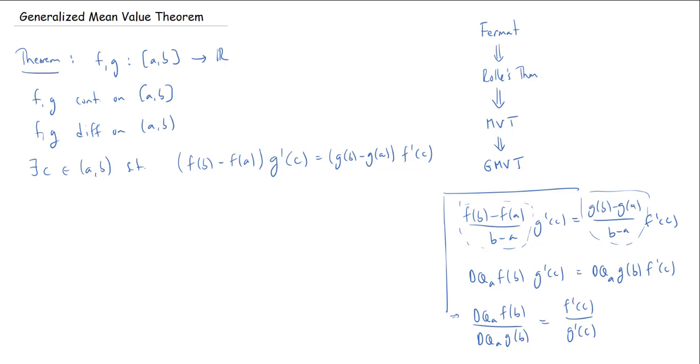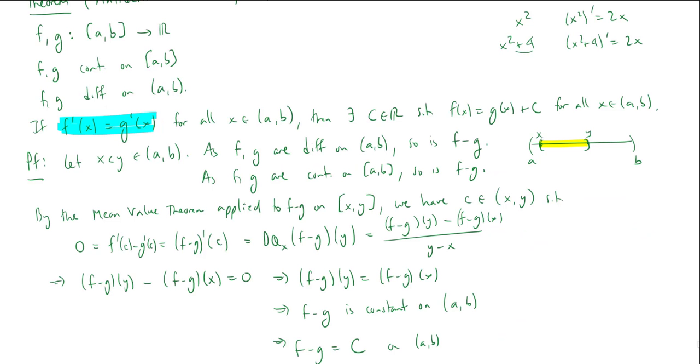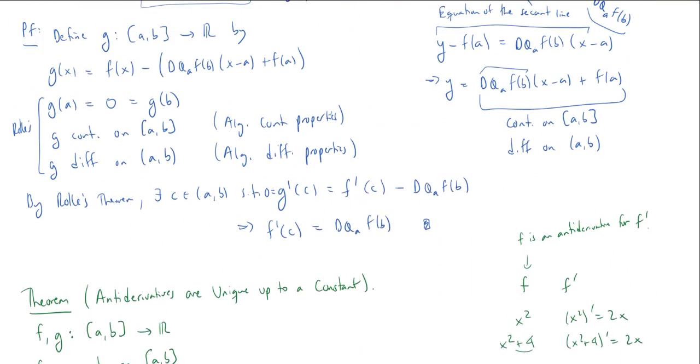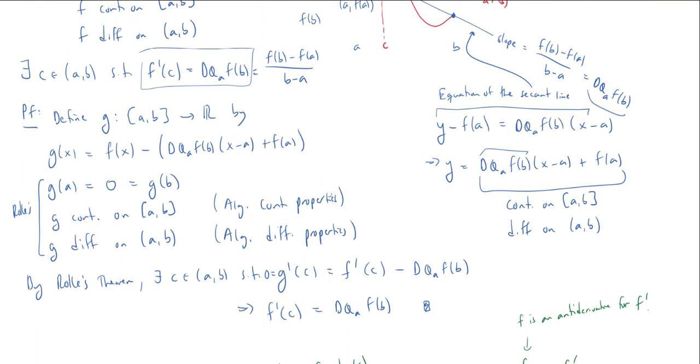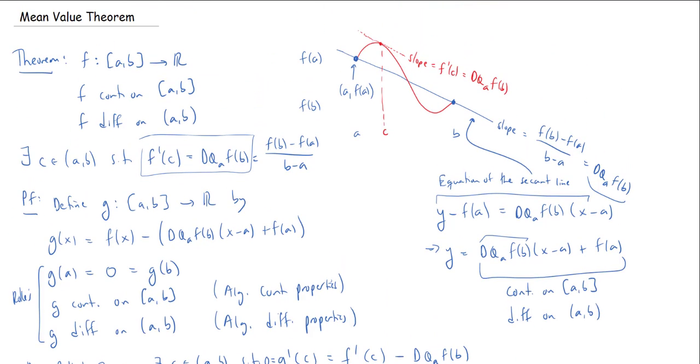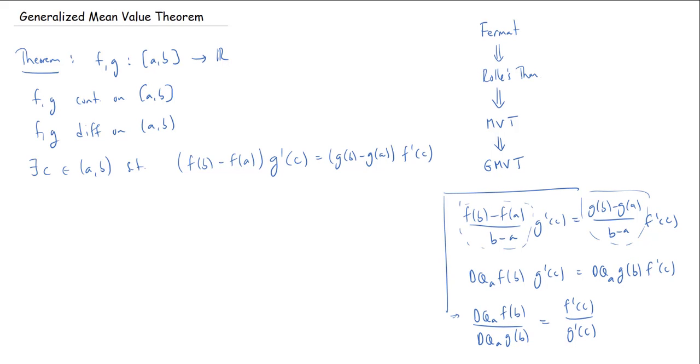So remember, when we were doing the mean value theorem, this expression here that we got where we said the instantaneous rate of change, the instantaneous slope at some point is equal to the average slope. We look at our picture, we know that the instantaneous slope, that's the red line, is equal to the average slope, that was the blue line. Again, so this version is saying the ratio of the average slopes is equal to the ratio of the instantaneous slopes at some point.